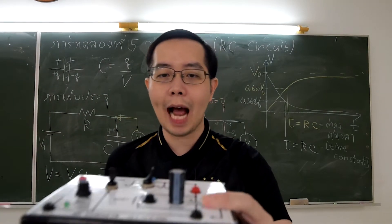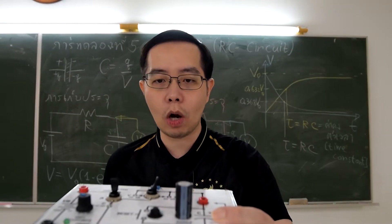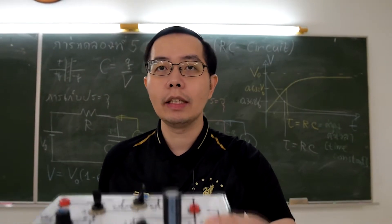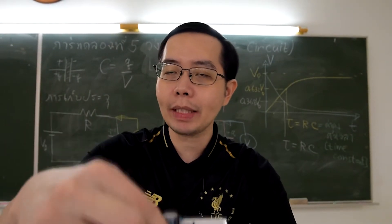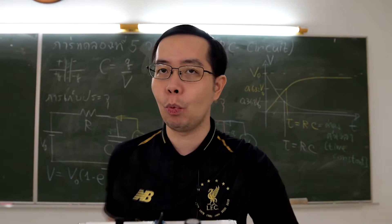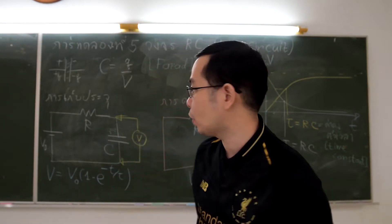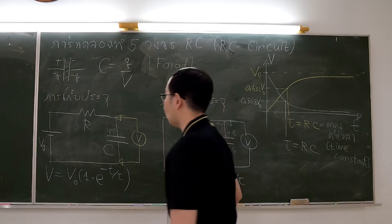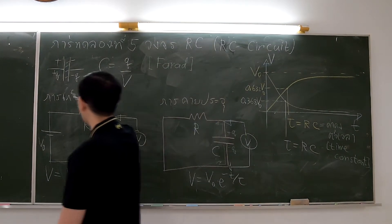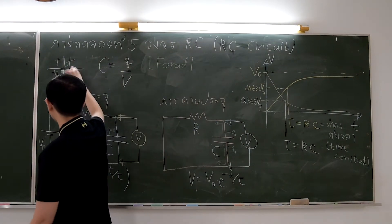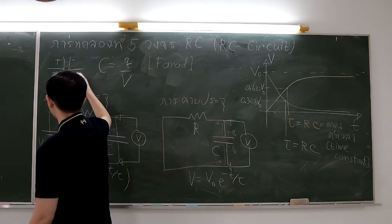A capacitor is an electronic instrument made for keeping positive and negative electric charges. A capacitor is made from two metal plates between which there is an insulator.